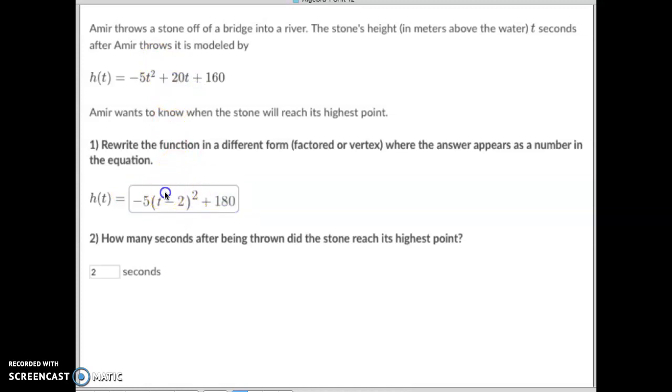And then to get this new number here, we're going to take and go negative 2 squared. So what is negative 2 squared? That would be positive 4. Positive 4 times negative 5 is negative 20. So by doing this we've added a negative 20. Well, to offset that, how do you cancel out a negative 20? With a positive 20. So we're going to add a positive 20 to 160 to get up to 180.